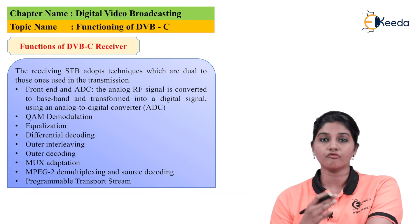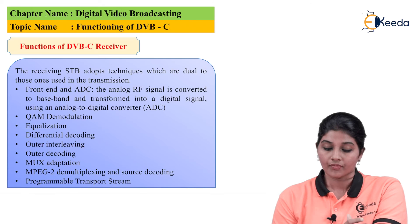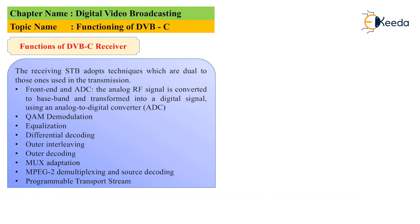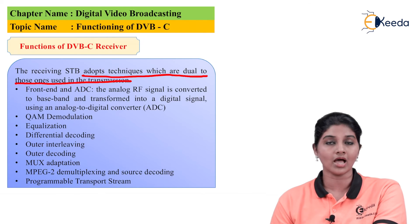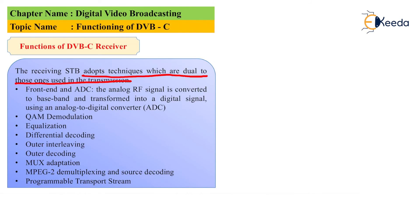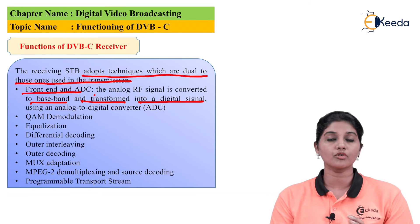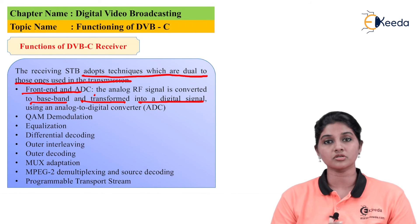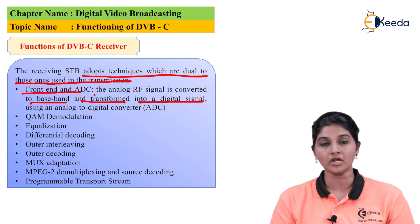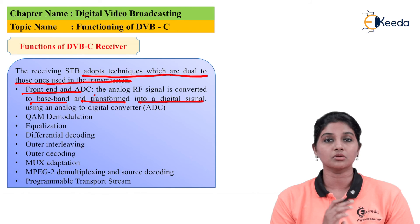The receiving set-top box (STB) adopts techniques that are dual to those used in transmission. The set-top box is used for converting the digital signal into analog form for compatibility with analog TVs. At the receiver, the first block is the frontend and ADC. The analog RF signal transmitted from the transmitter is first converted to baseband and then transformed into a digital signal using the analog-to-digital converter.